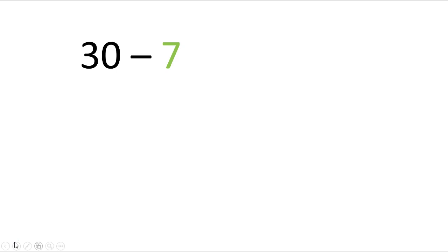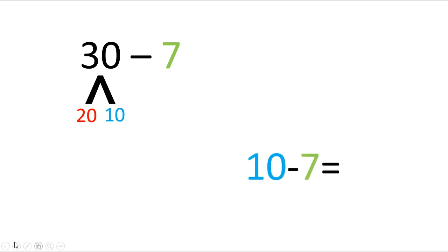So our first problem here is 30 minus 7. What we're going to do is we're going to break down this 30. We're going to take 10 out and we have 20 left. Then we need to make our next number sentence. So we're going to take this 10 here and put it over here. Do you notice how I made it the same colors here so that you can see where I'm taking it from? Then I take this 7 and I bring it down here.